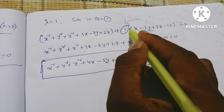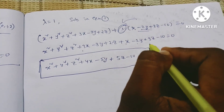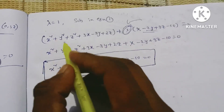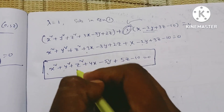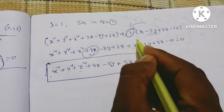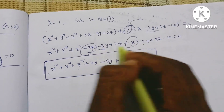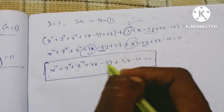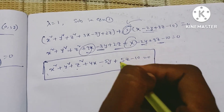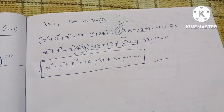Substituting lambda equals 1 into equation 1: 1 into X gives X, 1 into minus 2Y gives minus 2Y, 1 into 3Z gives 3Z, 1 into minus 10 gives minus 10 equals 0. So the final equation is: X squared plus Y squared plus Z squared plus 3X plus X equals 4X, minus 3Y minus 2Y equals minus 5Y, 2Z plus 3Z equals 5Z, minus 10 equals 0. This is the equation of the required sphere.